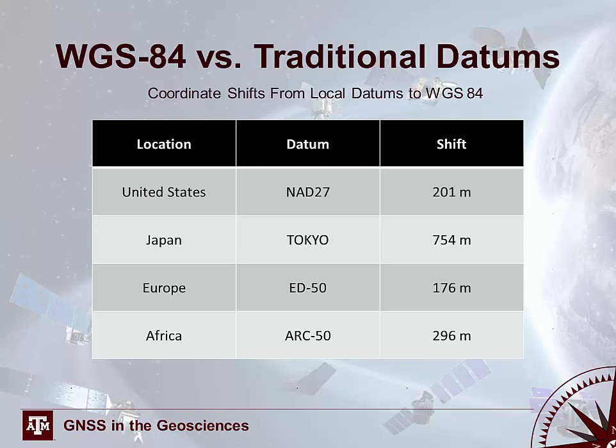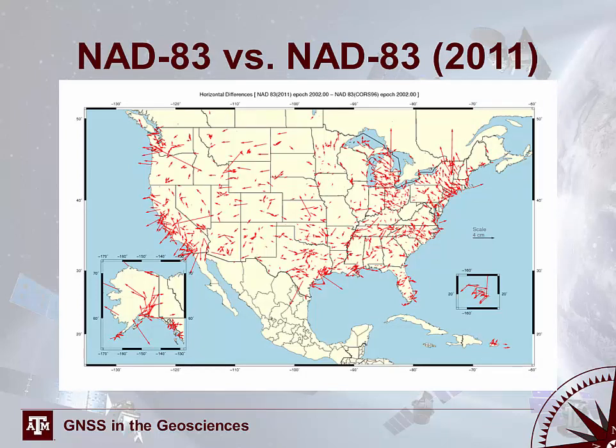As mentioned earlier, mapping data in two or more different datums can cause significant shifts in the apparent location of a point. In this table, you can see how large the shifts in location can be when comparing WGS-84 to more region-specific datums such as those used in Japan, Europe, or Africa. It's also important to note that there can be significant shifts between different updates or iterations of seemingly the same datum. In this map, we can see the magnitude and direction of mismatch between the original NAD-83 datum and a 2011 updated NAD-83 datum. It's important to note that versions such as the 2011 NAD-83 datum may not be labeled appropriately in all GIS and other software.